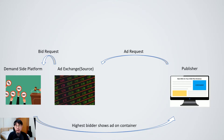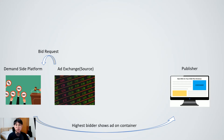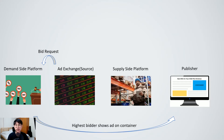Now that we understand how the demand side works, let's break down the ad request process further. On the other end of the DSPs is the SSP, also known as the supply side platform — this is where publishers can sell their inventory programmatically. Whenever a user visits the publisher's website, the site automatically sends the supply availability to the SSP, which will then send the ad request to the ad exchange.